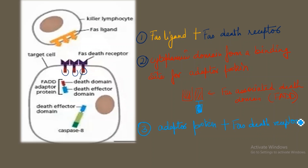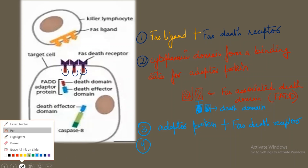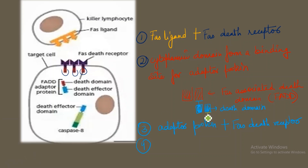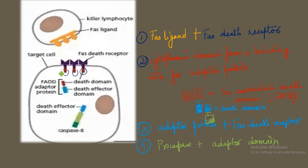The next step involves another death domain interaction. The death domain of procaspase 8 (shown in light blue) attaches to the adapter protein FADD. So procaspase 8 binds to the adapter protein via its death domain. This demonstrates the importance of the death domain: the FAS death domain binds the death domain of FADD, and again via death domain, FADD attaches to procaspase 8.